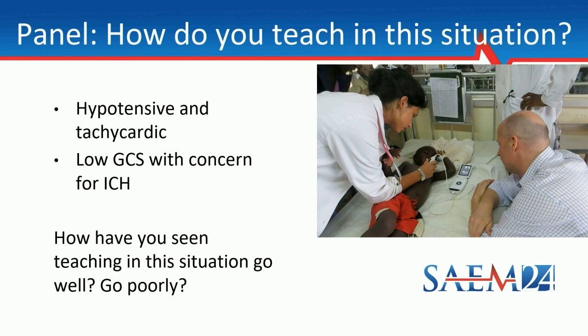This patient is hypotensive and tachycardic with a low GCS concerning for a head bleed. Grace, you already mentioned the struggles sometimes that American doctors have in trying to adapt. How have you seen education in these high-stakes situations either going really well or going really poorly with those east-west, north-south, American-African interactions?